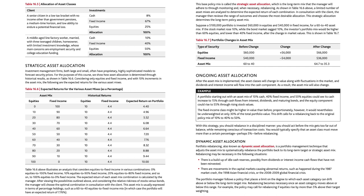As shown in Table 16.6, a limited number of asset mixes are analyzed to determine the expected return of each combination. In consultation with the client, the manager reviews the range of outcomes and chooses the most desirable allocation. This strategic allocation determines the long-term policy asset mix. Suppose a $100,000 portfolio is invested $60,000 in equities and $40,000 in fixed income for a 60/40 asset mix. If the stock market rose 10% while the bond market sagged 10%, the investor's portfolio mix would be higher than 60% equities and lower than 40% fixed income after the change in market values.